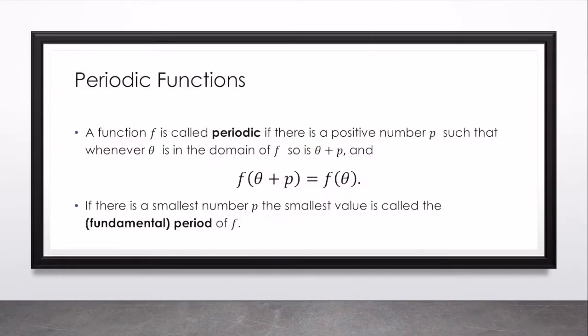A periodic function is called periodic if there's a positive number p such that whenever theta is in the domain of f, so is theta plus p and the two values are equal. If there's a smallest number p, the smallest value is called our fundamental period, or just the period of f. And believe it or not, all of the trigonometric functions are periodic.